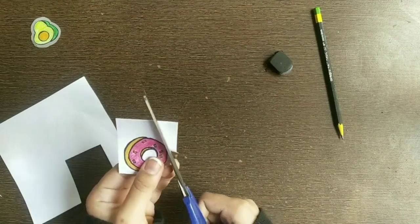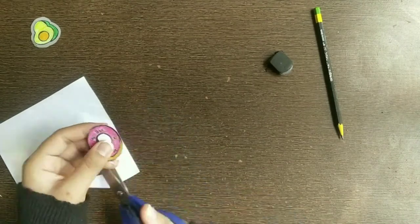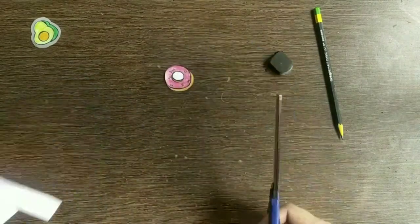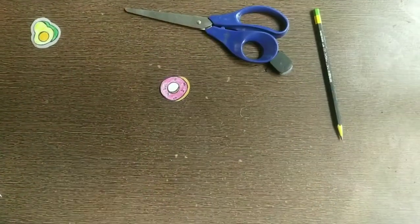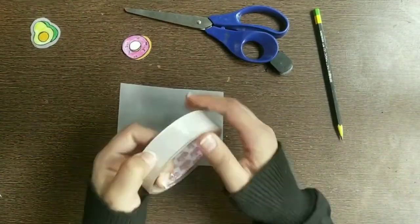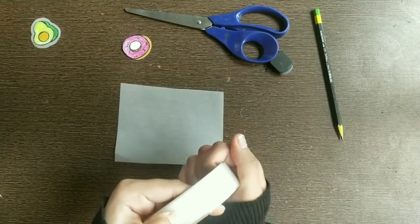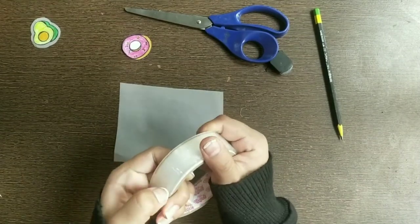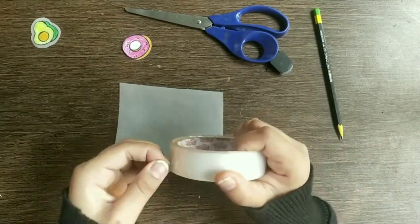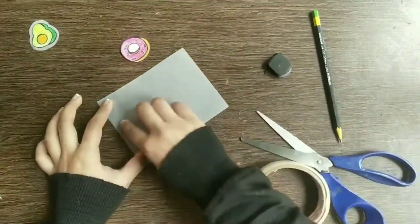After coloring my donut I am again cutting it out neatly. This time I am first putting a layer of tape on a wax paper, then my sticker, and then again a layer of tape. So I will make a sandwich.